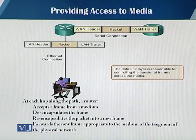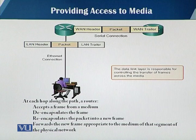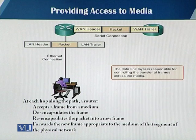Let's look at an example of how communication takes place from your machine to another machine, or from source to destination. At each hop along the path, a router accepts a frame from a medium, de-encapsulates the frame, re-encapsulates the packet into a new frame, and then forwards the new frame appropriate to the medium of that segment of the physical network.